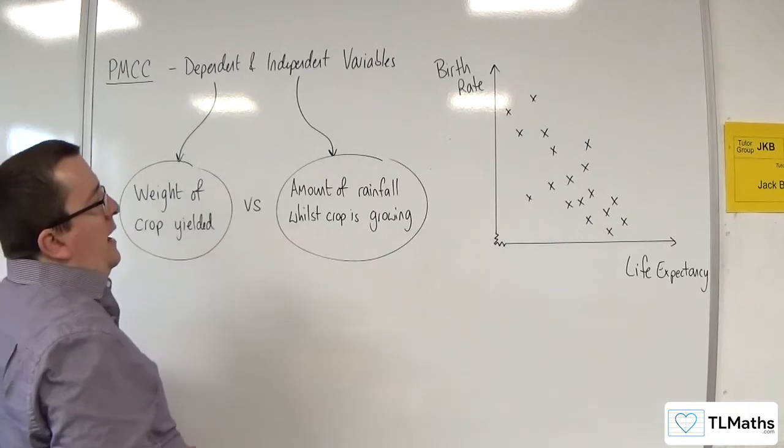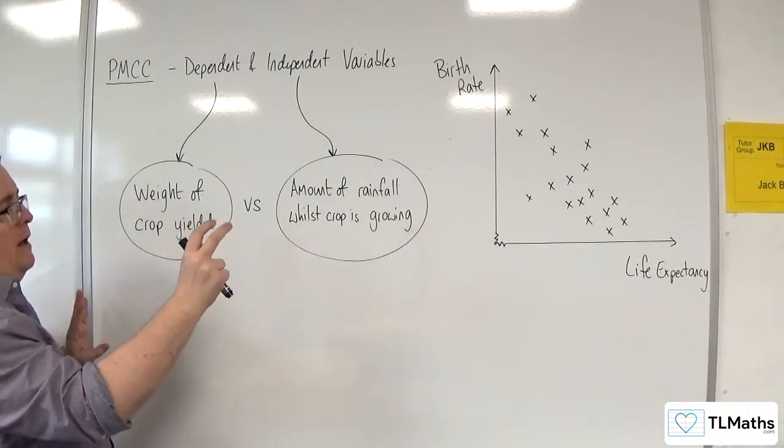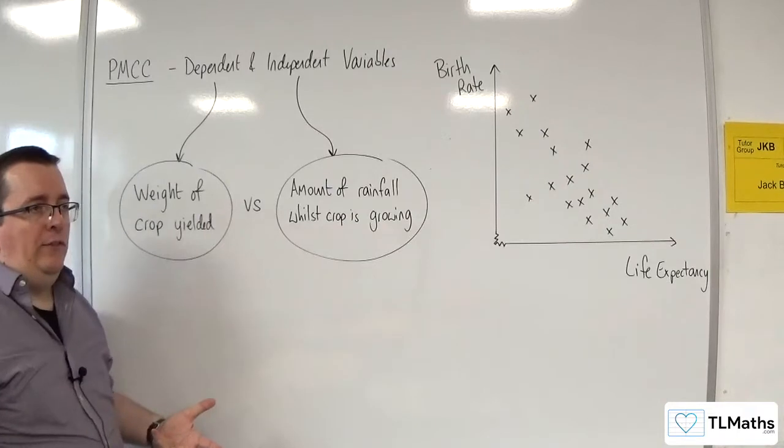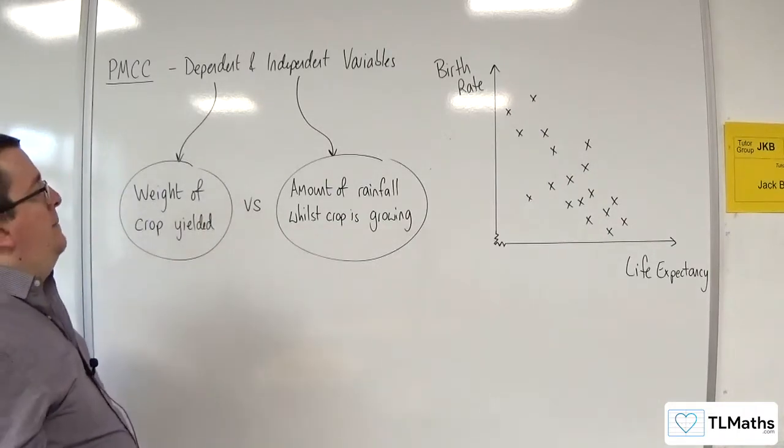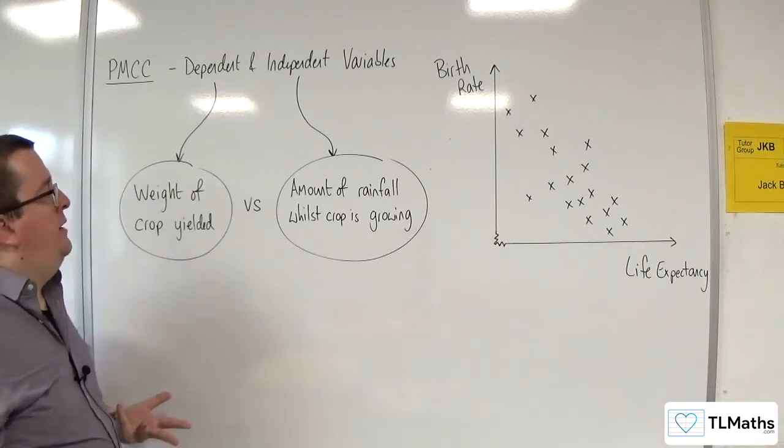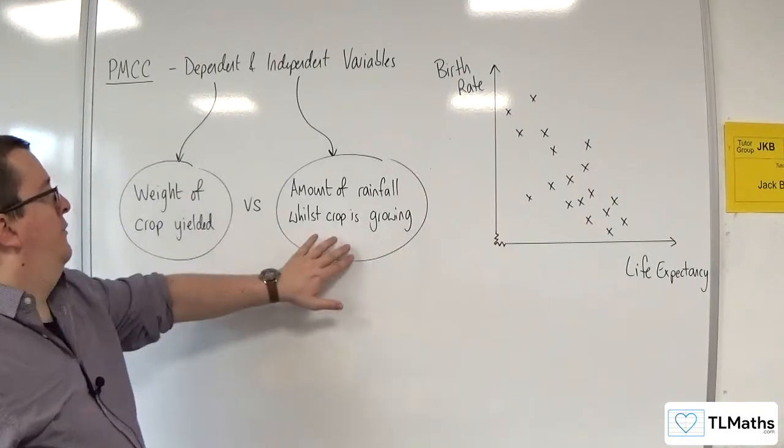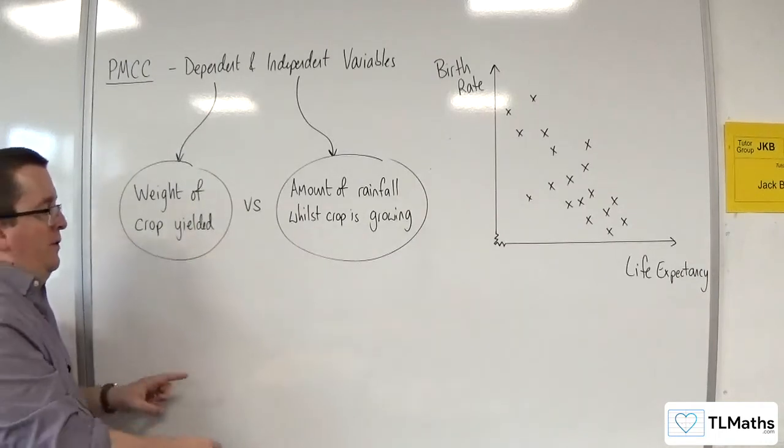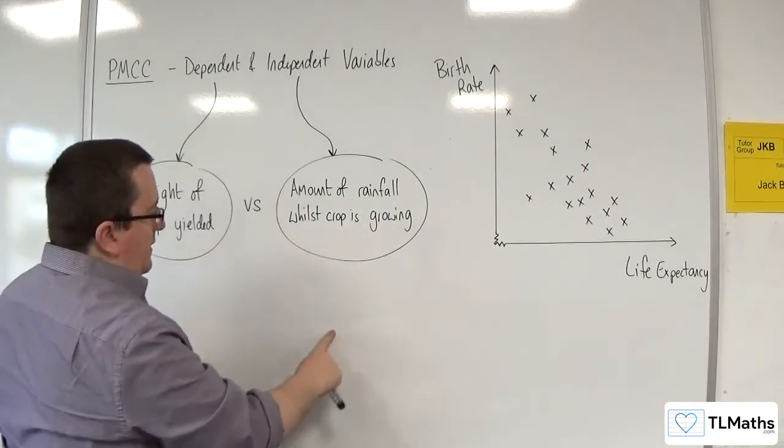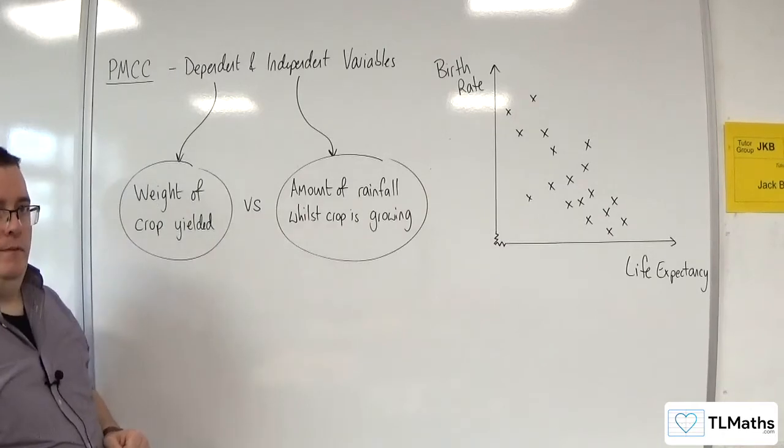This might be for either over several seasons or it might be in different fields or in different parts of the country where the amount of rainfall can be recorded and the weight of the crop yielded. And then you would plot that data on your scatter graph.